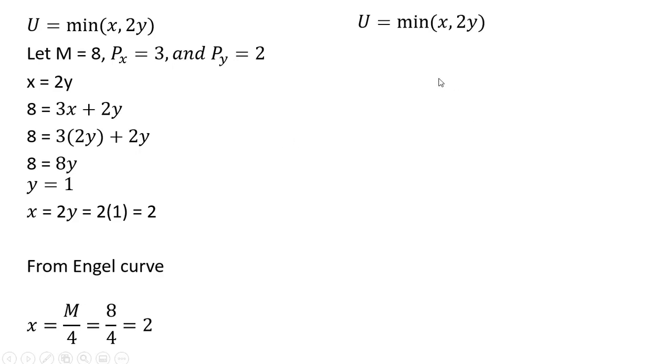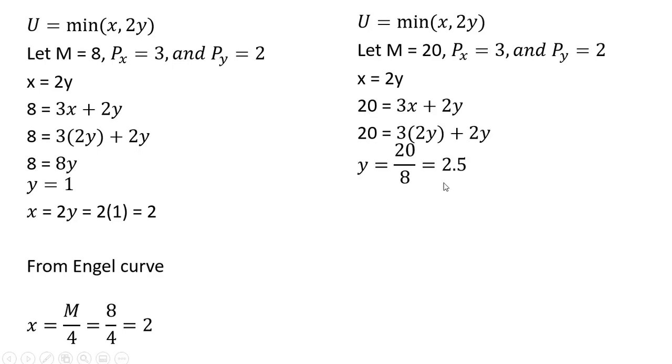Let's do another utility maximization. This time, let's increase income to $20, same prices, holding the prices constant. x equals 2y, making that substitution into our budget constraint. Instead of 8, we now have 20 for $20. And we're going to solve for y. y equals 2.5, and x equals 2 times y. So in this case, x equals 5.